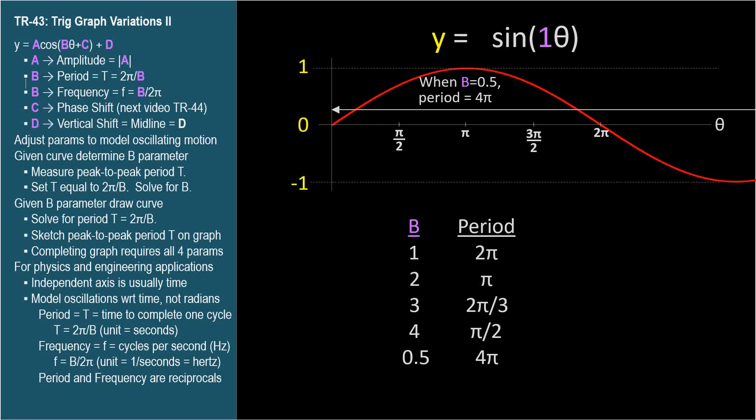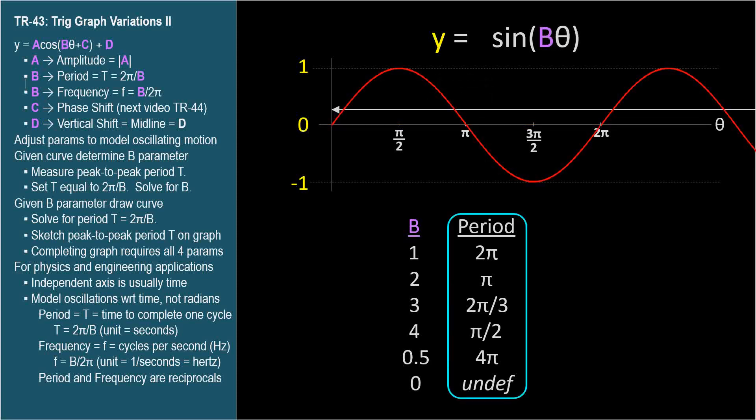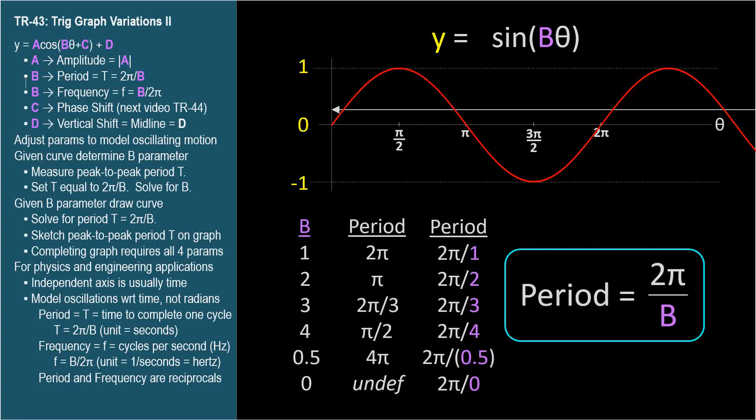And when b equals 0, the equation is y equals sine 0 theta, which is just y equals sine 0. And the sine of 0 is 0. The line doesn't oscillate, so there's no period. These period values don't look like there's a discernible pattern. But when we rewrite them in terms of 2 pi, a very clear pattern emerges. The period of an oscillating wave is 2 pi divided by the b parameter.